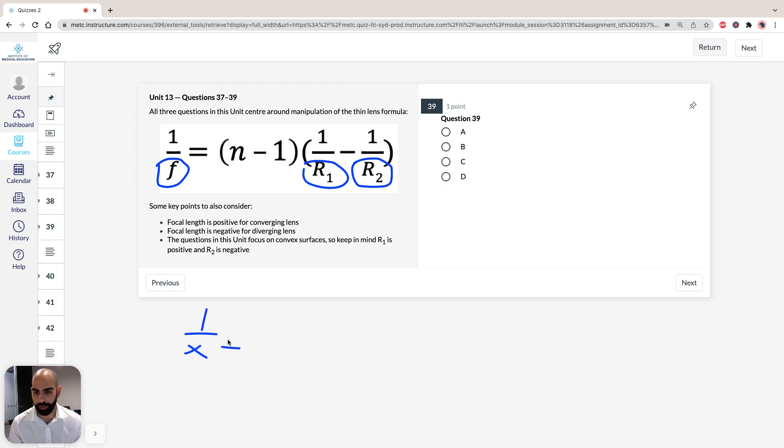So we can rewrite that as, we just say, x, 1 over x equals n minus 1, 1 over x. So remember, R1 is going to equal x, R2 is going to equal negative x, because it's a bi-convex lens. So it's going to be 1 over x minus minus 1 over x. So we can simplify that, so 1 over x is going to equal n minus 1, so that's going to be 1 over x plus 1 over x is going to be 2 over x.